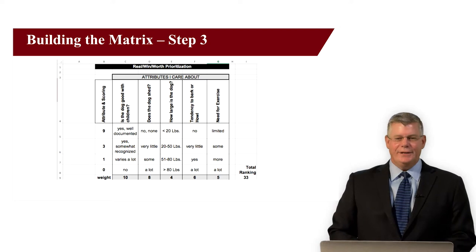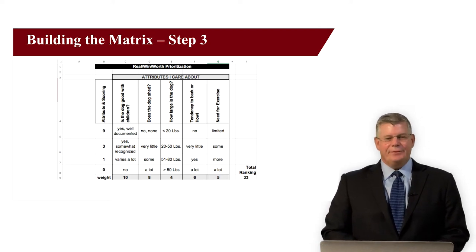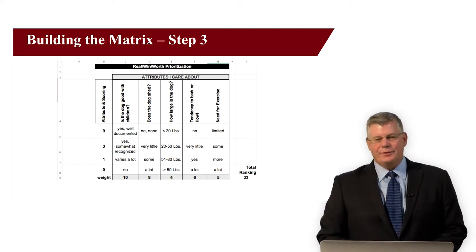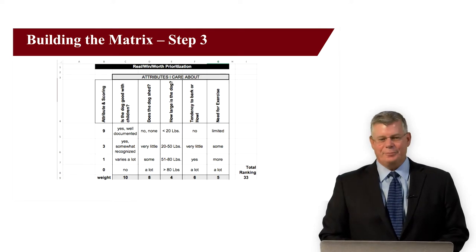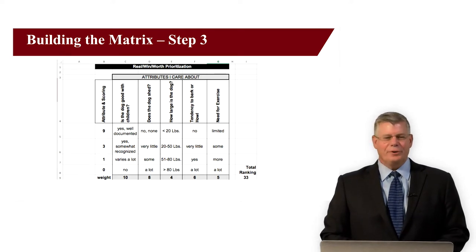Now it's time to weight each of the criteria. In a business project real win worth matrix, I like to have the weightings total 100. For this example, we'll use a total of 33 points. The first attribute, good with children, was the most important to us, so we weighted that a 10.